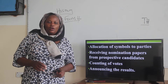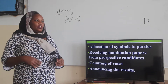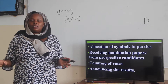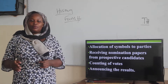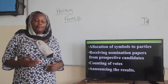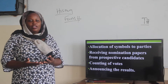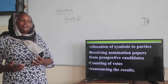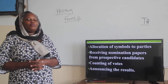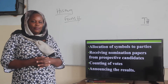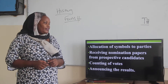They also give the allocation of symbols to parties. If all the parties use the same symbol, you might end up being confused. Therefore, they allocate different symbols — if one is using a lamp, maybe another one is using an axe — so that even those who do not know how to read can identify their candidates using those symbols. They also receive nomination papers from prospective candidates.